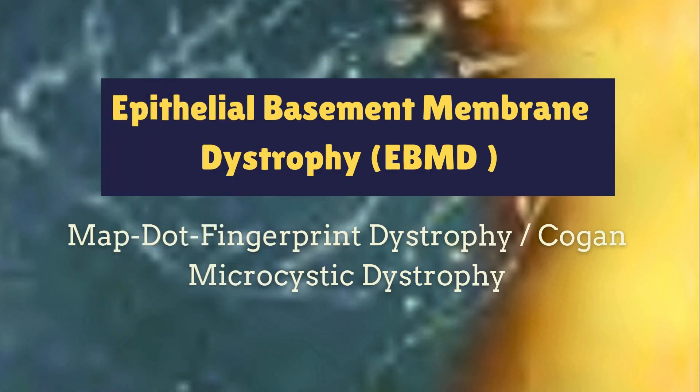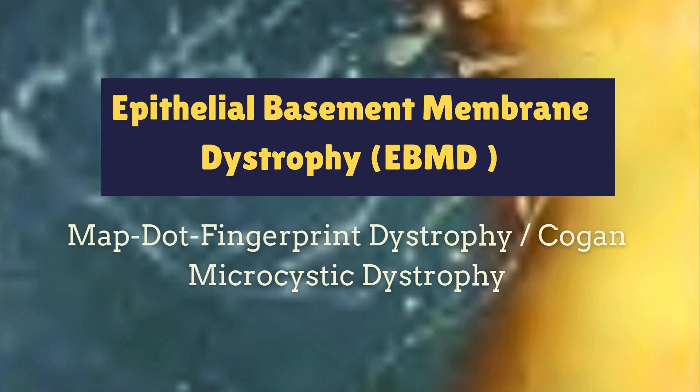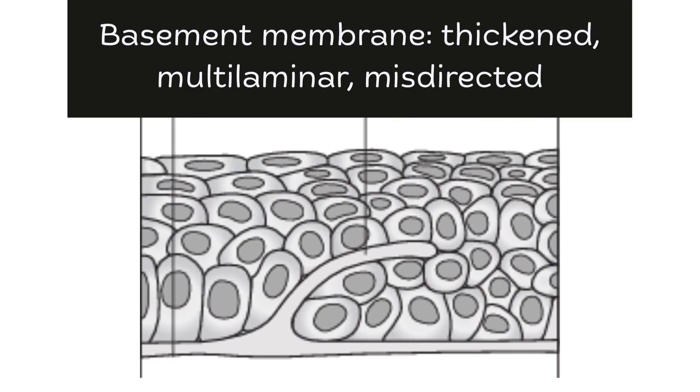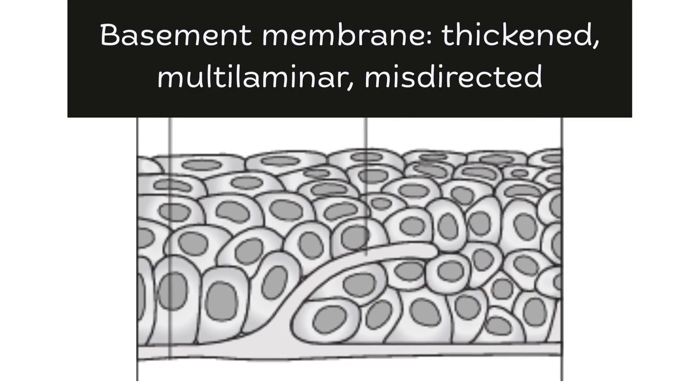Now let us dive into the first and most important one — the epithelial basement membrane dystrophy, abbreviated as EBMD. It is also known as MAP dot fingerprint dystrophy or Cogan's dystrophy. The basal epithelial cells produce an abnormal multilaminar basement membrane in Cogan's dystrophy.